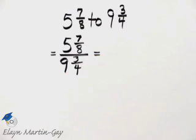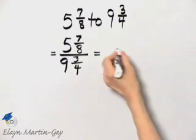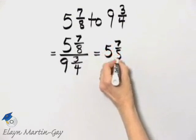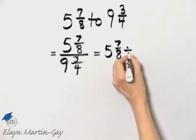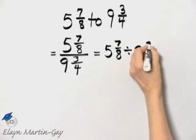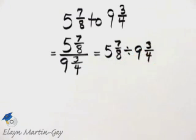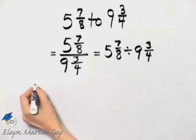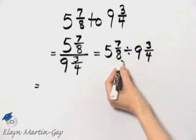Now let's talk about what this means, because remember the fraction bar does mean division. So can you see that this does mean 5 and 7 eighths divided by 9 and 3 fourths? And let's simply work this out then. Let's remember how we divide mixed numbers. First, let's write each mixed number as an improper fraction. How do we do that?